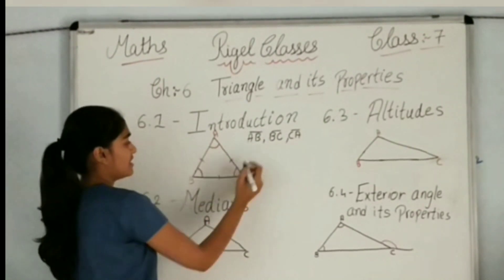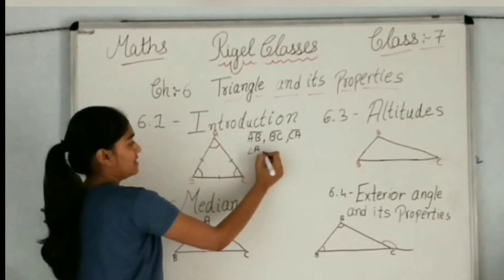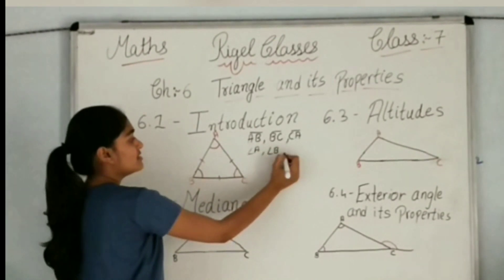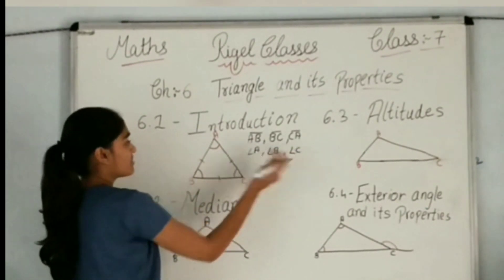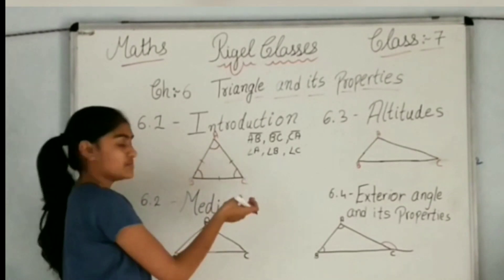And it has three angles: angle A, angle B, and angle C. Any name can be given from the alphabet.